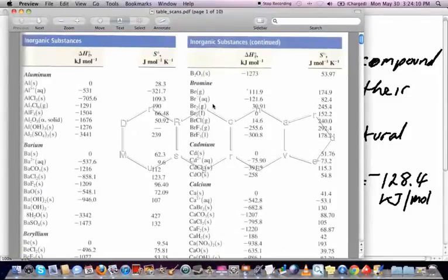Bromine, Br2 is liquid, see that? That's zero. So that's how you know that Br2 gas is not the natural state, for example. Anything with zero is going to be the natural state.